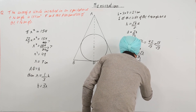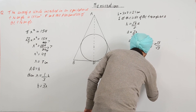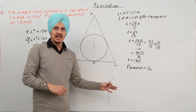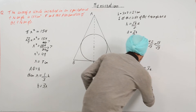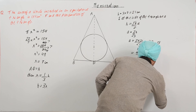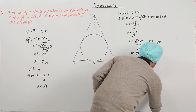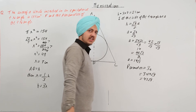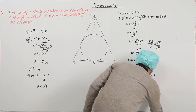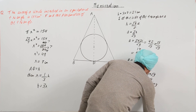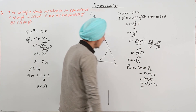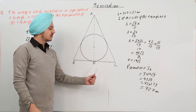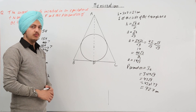The perimeter of an equilateral triangle equals 3 times one side, so perimeter = 3 × 14√3 = 42√3. Since √3 = 1.73, we multiply 42 × 1.73 to get the perimeter equal to 72.7 centimeters.